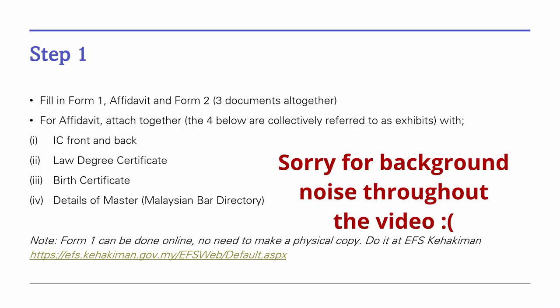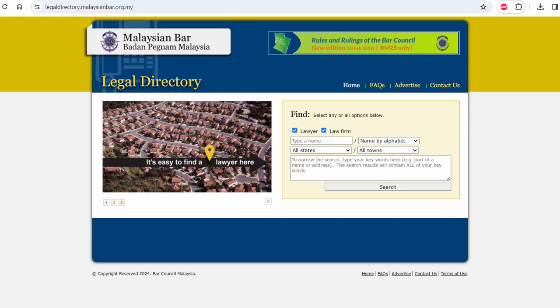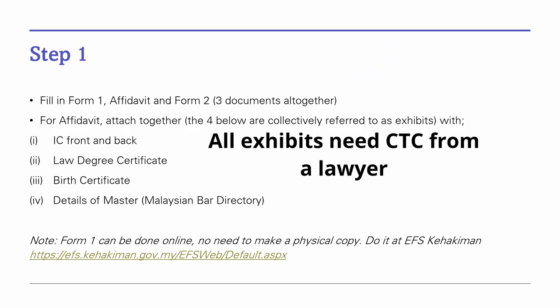Step 1: Fill in your Form 1, the Affidavit, and Form 2 — so there are three documents. For the Affidavit, you will also need to print out your IC front and back, your degree certificate, your birth certificate, and the details of your master, which are called exhibits to attach with the Affidavit. The website to the Malaysian Bar directory is here to find the details of your master. All of the exhibits need to have a CTC or certified true copy, so ask any lawyer in your firm to do the CTC for you — it cannot be done by your own master.